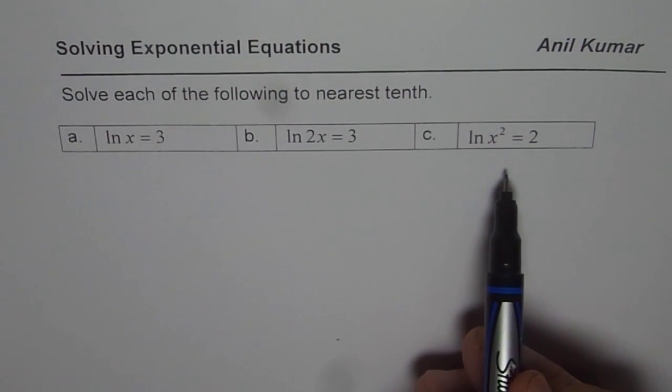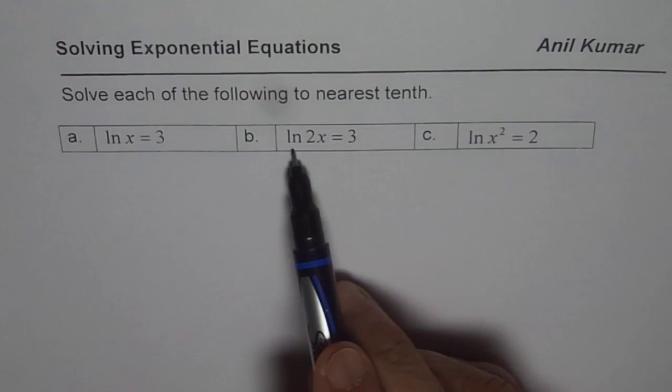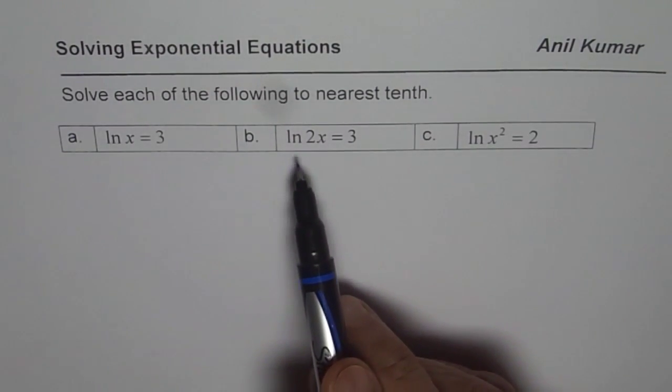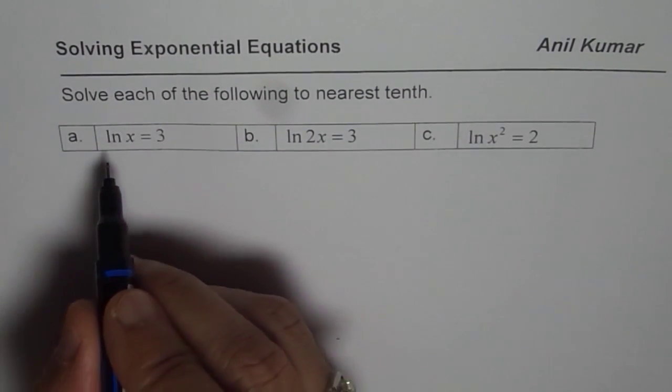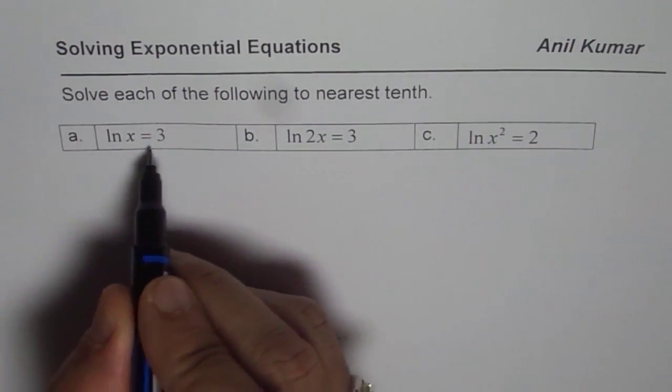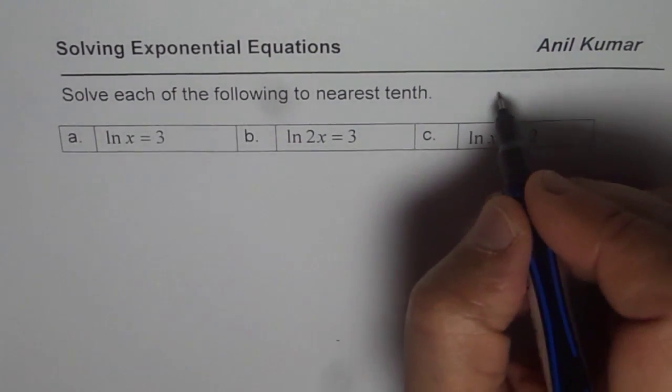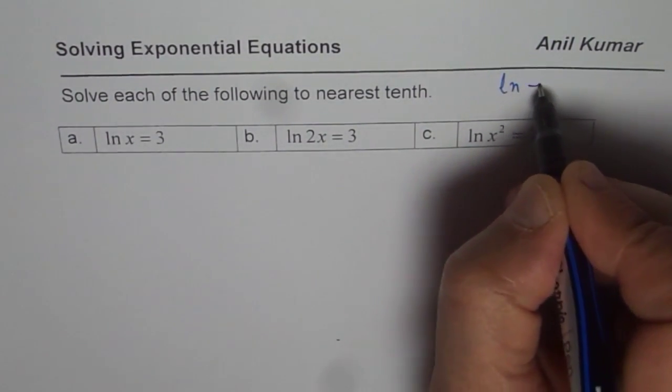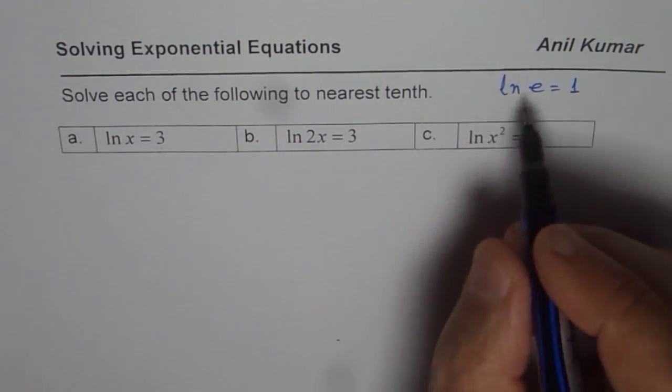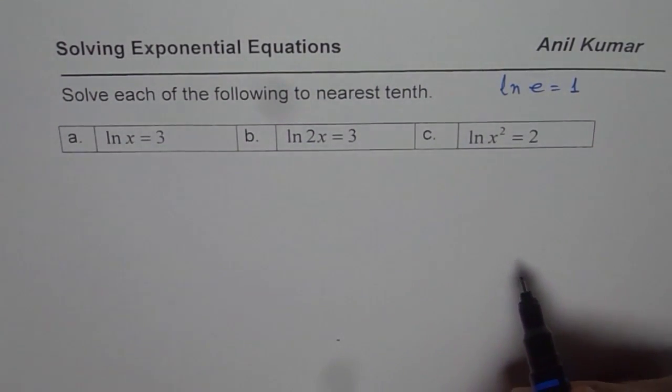We will use the properties of logarithms which we have learned. ln is log to the base of e. So ln x equals 3. How to solve it? What we know is ln of e is 1. So these are kind of inverse of one another.